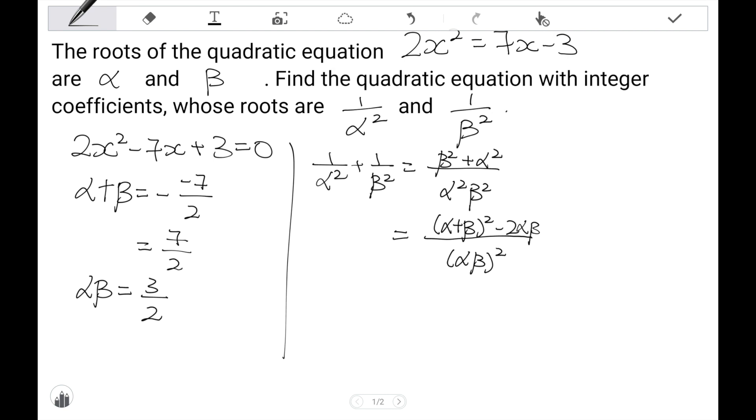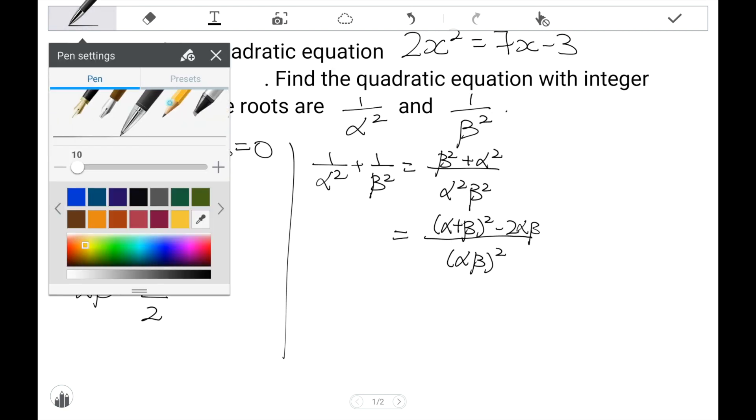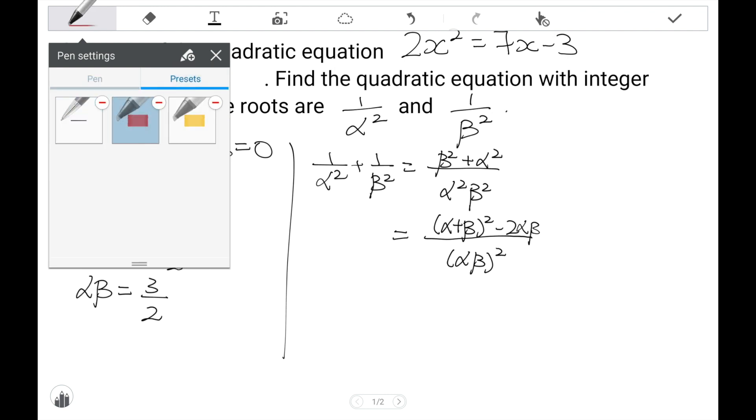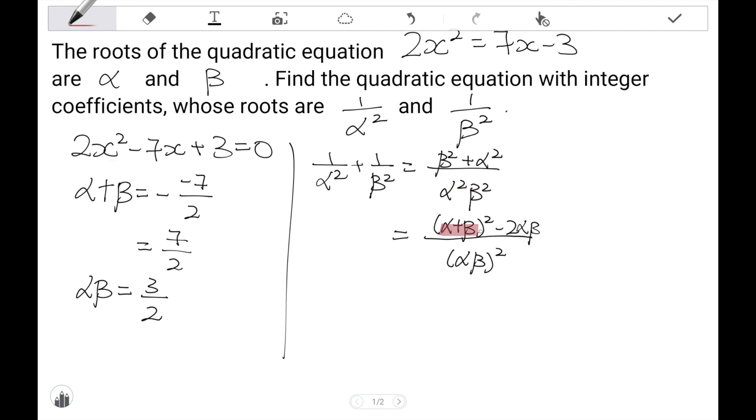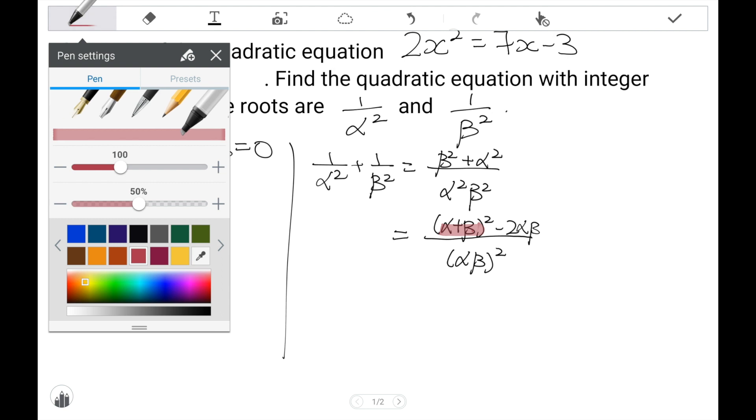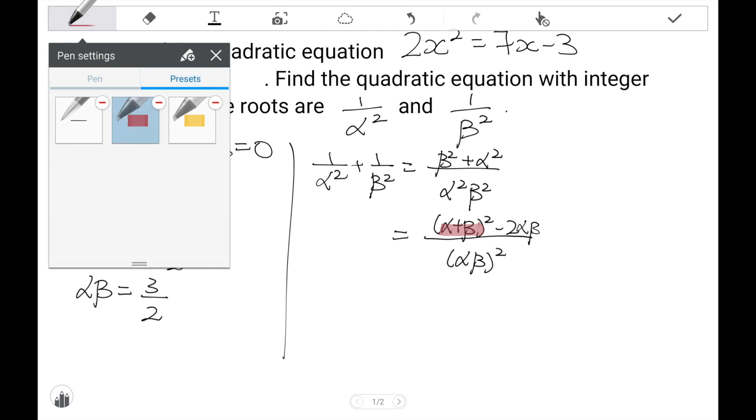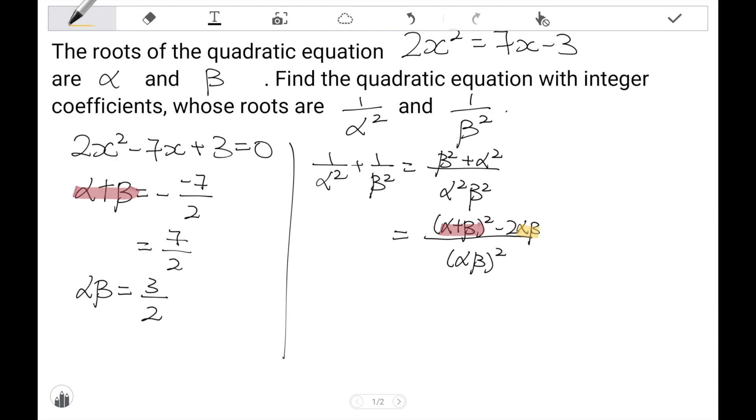Now, your question would be, why do I want to do that? So, the reason why I wanted to change beta squared plus alpha squared into this, is because I actually have the value of alpha plus beta, as you can see over there. And I also have the value of alpha beta, as you can see over here. Both alpha betas in the denominator and the numerator as well.